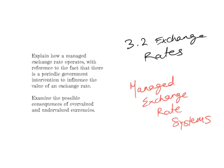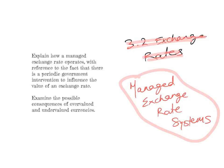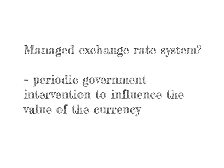This is the fifth video of the 3.2 unit about exchange rates. In this video, I'm going to explain and discuss managed exchange rate systems. I'll explain how a managed exchange rate system operates, with reference to the fact that there is periodic government intervention to influence the value of the exchange rate, and I'm going to examine the possible consequences of overvalued and undervalued currencies.